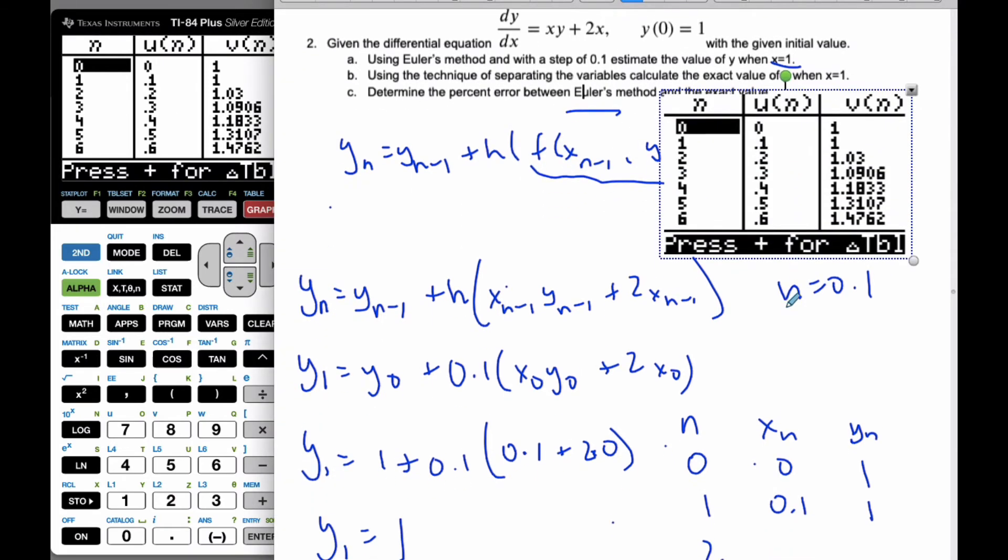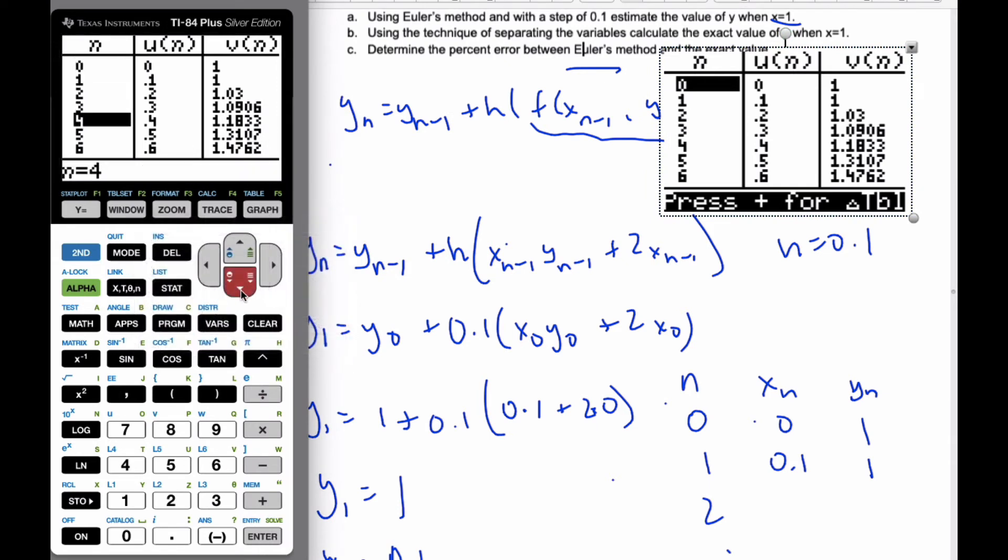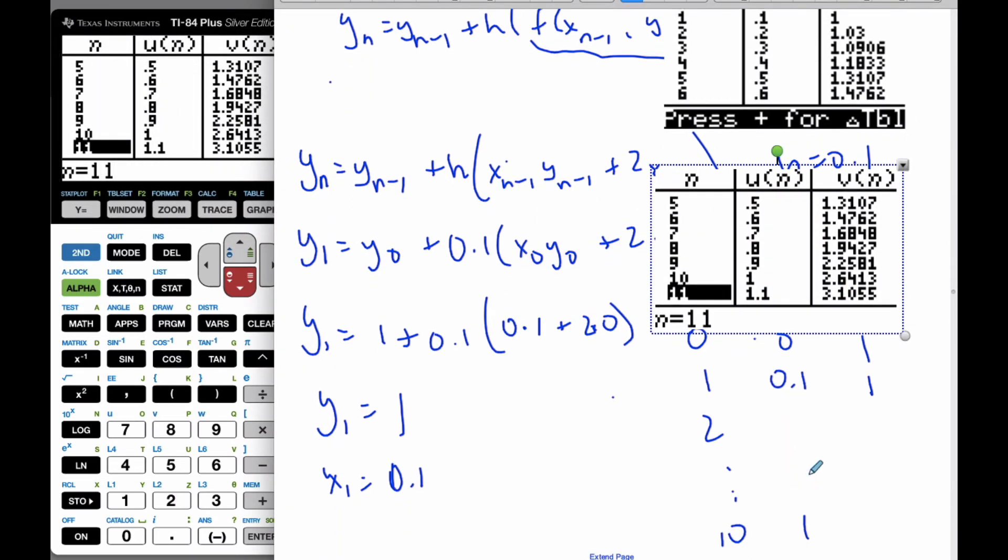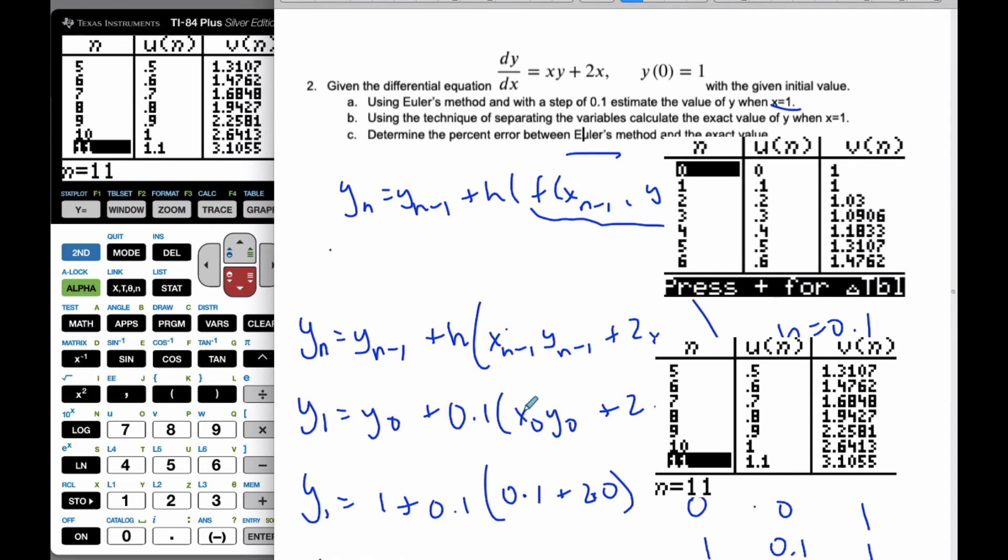And so you can see here is my table. Here's my table. 0.1, 1, and 0.1 and 1, 2, and so on. When I continue to go all the way down, I can see that my estimate, when x equals 1, y is 2.6413. So by Euler's method, in my calculator, I know that y at 1 is going to be 2.6413. So there's how we can use our calculator to help us out.